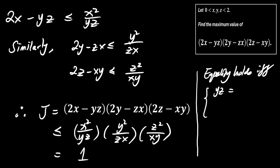Equality holds when yz equals x squared over yz, zx equals y squared over zx, and xy equals z squared over xy. This implies that x equals y equals z equals 1.